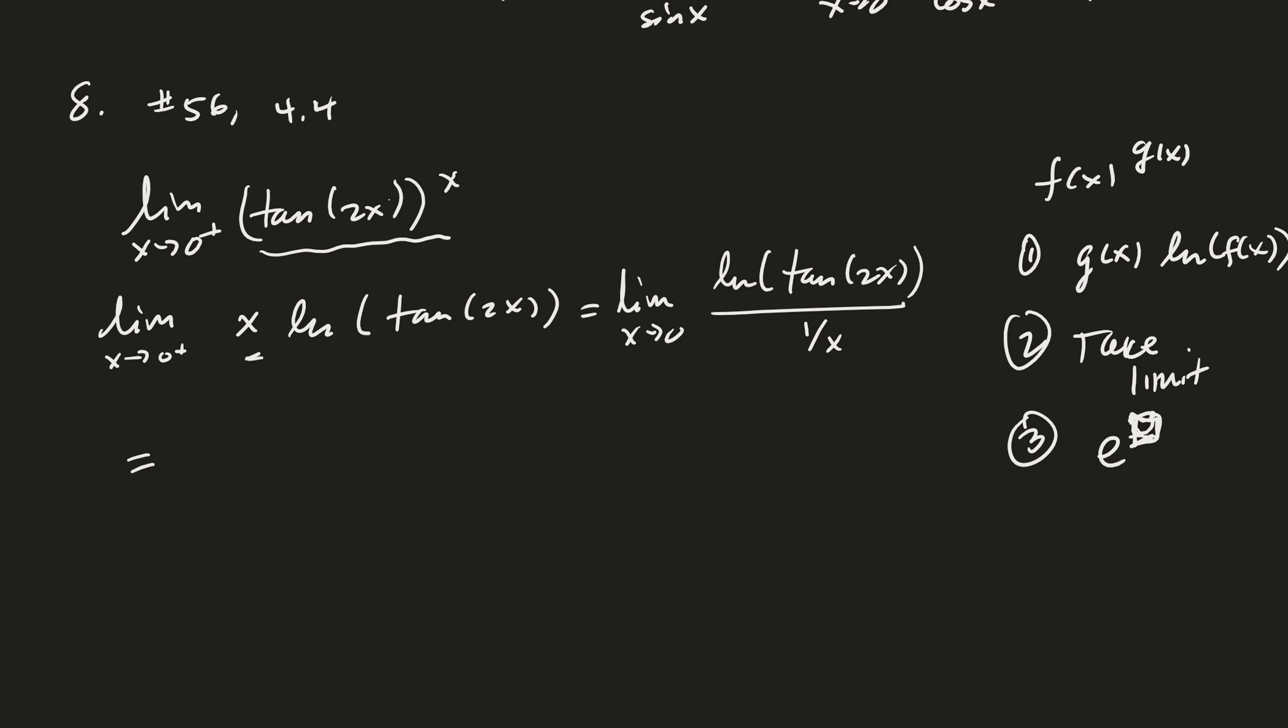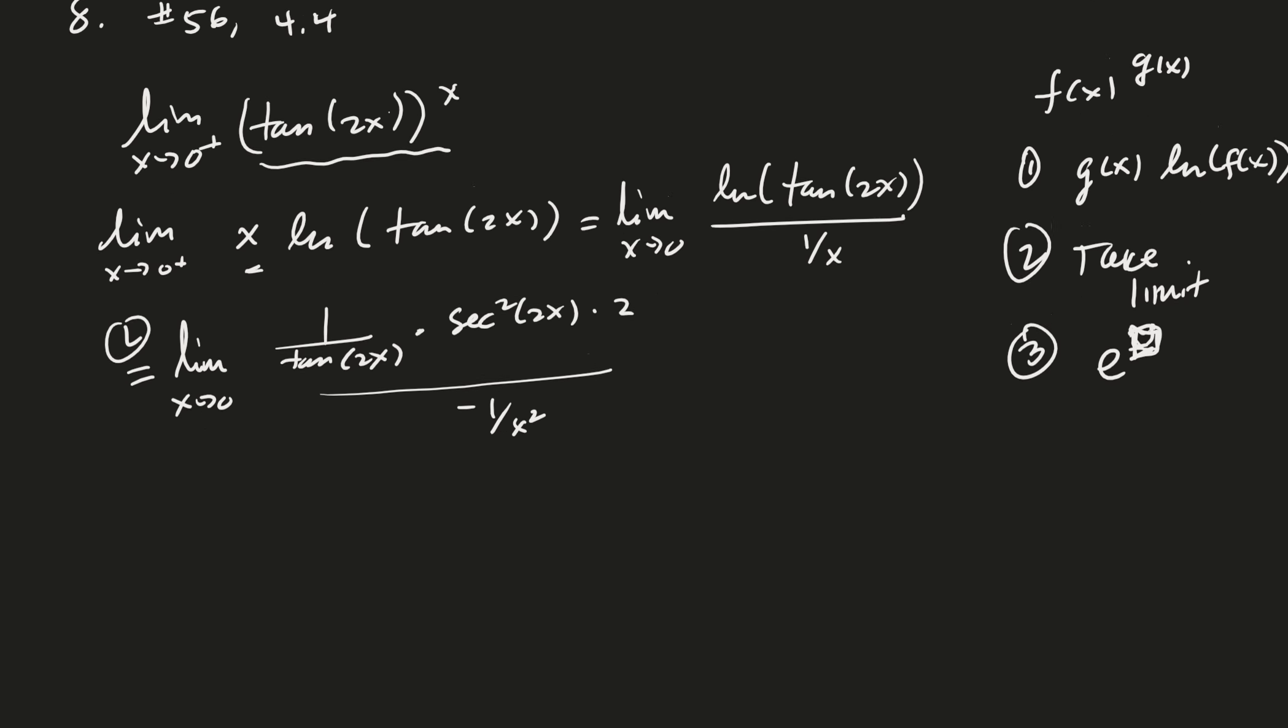Good. And now we are in a fraction. We can use L'Hôpital. So let's, quick as a bunny, just take the derivative of that. So that's going to be 1 over tangent of 2x times derivative of tangent is secant squared of 2x. And then remember to multiply by 2, right? And this is all divided by minus 1 over x squared. Good.